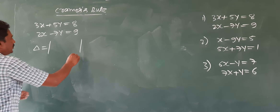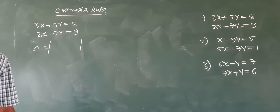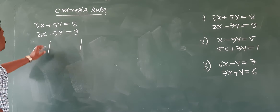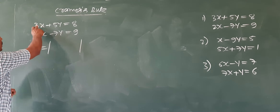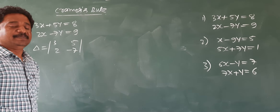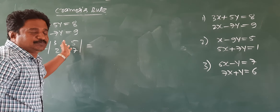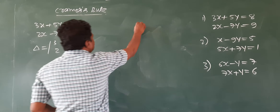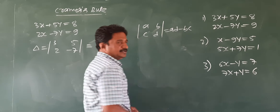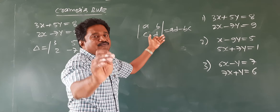I take the first question: 3x plus 5y equals 8, and 2x minus 7y equals 9. How to apply Cramer's rule? So, delta — delta means determinant. If I write it like this with the vertical bars, it means determinant. Determinant is a real number. For this determinant, you collect only numbers — coefficients: 3, 5, 2, minus 7. Expand this. The general form is: the value of determinant a, b, c, d equals ad minus bc. Product of this diagonal minus product of this diagonal.